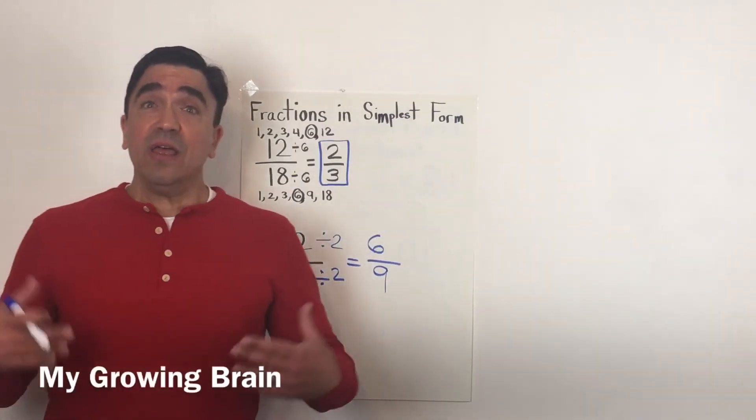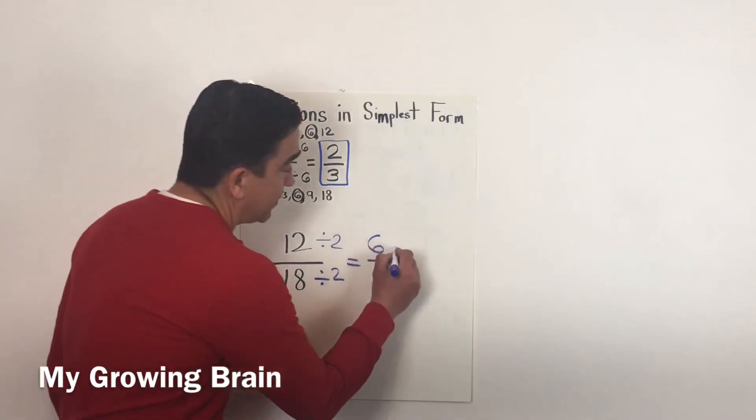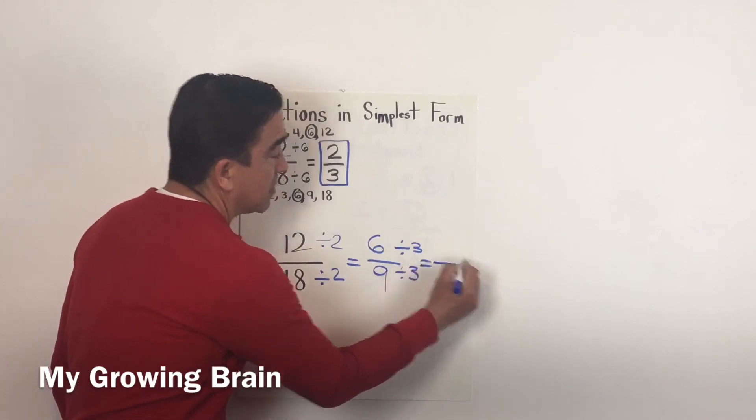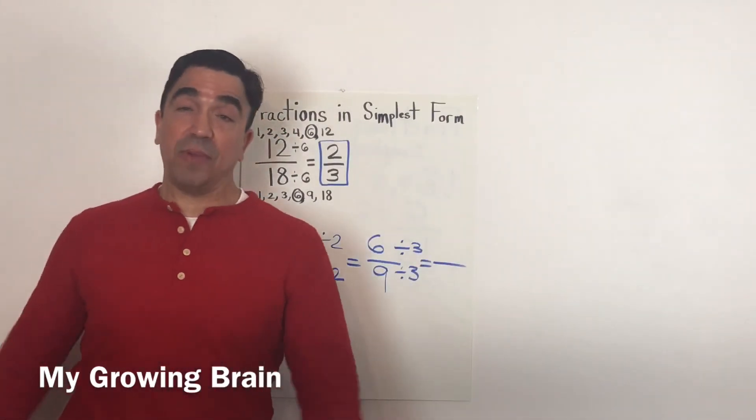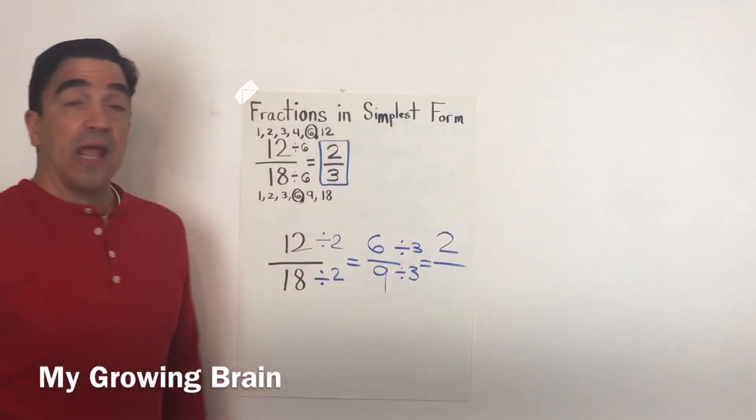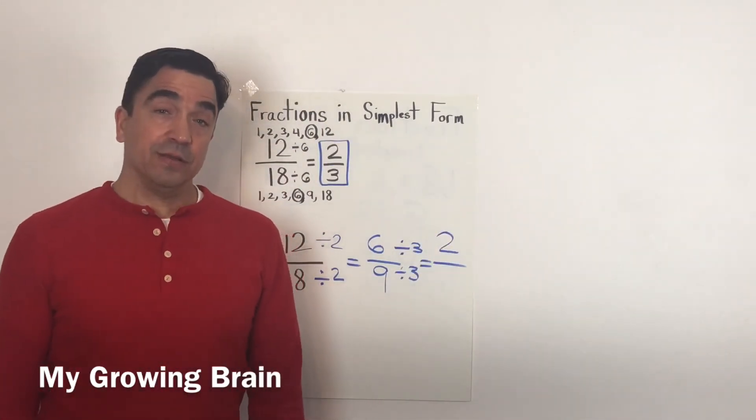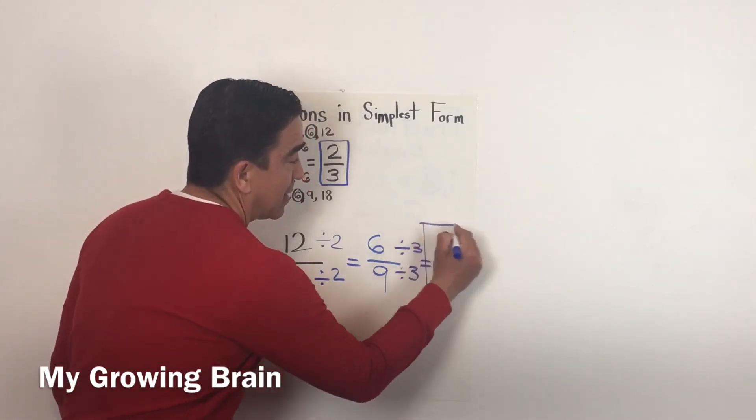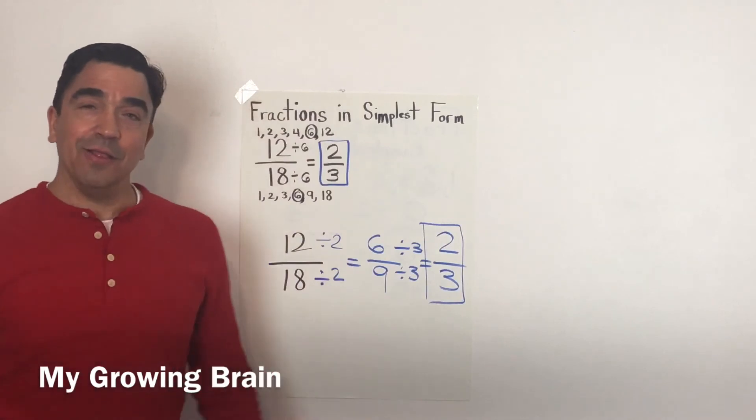I'm going to divide it by 3. So 6 divided by 3 is 2, and 9 divided by 3 is 3.